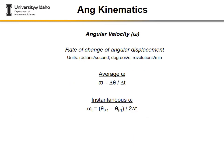Angular velocity — denoted omega — is the rate of change of angular displacement. Units are angle per unit of time: radians per second, degrees per second, or revolutions per minute. As with linear kinematics, there's a distinction between average angular velocity, calculated over a total interval, and instantaneous angular velocity. For the instantaneous value at the ith frame, we use the previous and following frames divided by 2Δt, where Δt is determined by the frame rate.